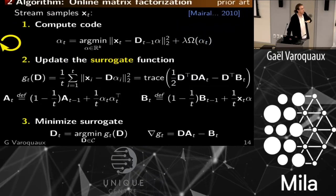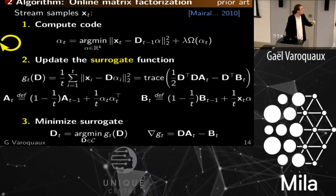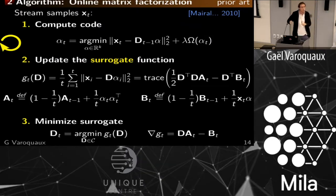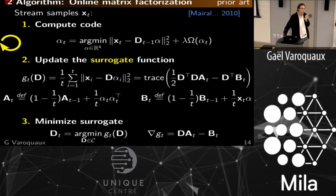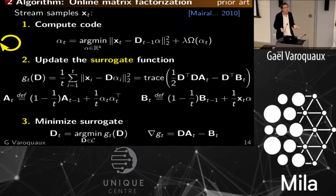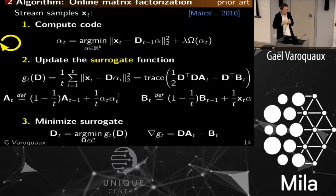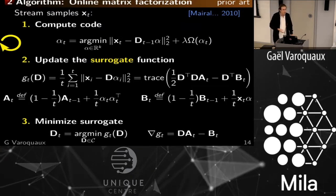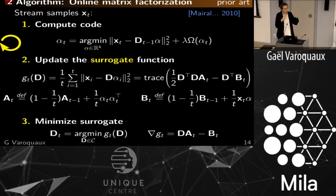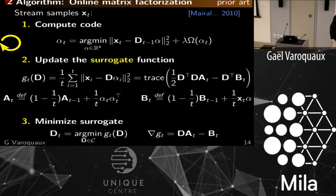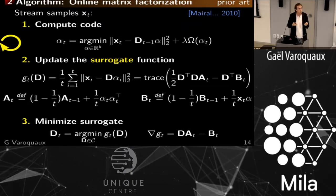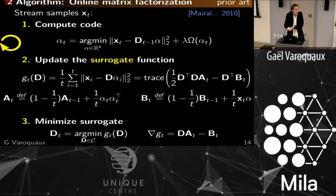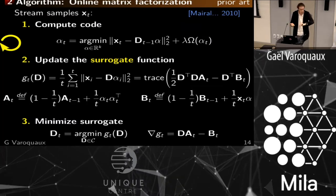This is the original 2010 paper. Mairal proved it's more general in his 2013 paper — it works not only for squared loss. Regarding momentum: the problem with momentum is it's completely blind to the full Hessian. Momentum is like adding friction to an oscillator — it avoids oscillation but doesn't rescale different directions. This approach is much closer to second-order because the matrix A converges to the covariance of your variables. It's not technically a second-order algorithm, but it's closer to one, and this only works because we capture this covariance.